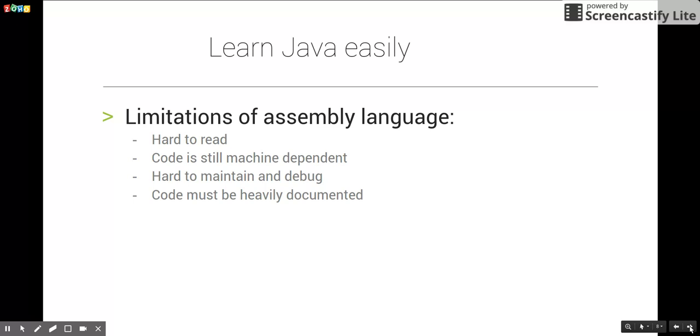Now we'll see the limitations of assembly language. It is very hard to read, but better than machine level language. Code is still machine dependent. It's hard to maintain and debug - I'll talk about debugging in later videos. Code must be heavily documented.